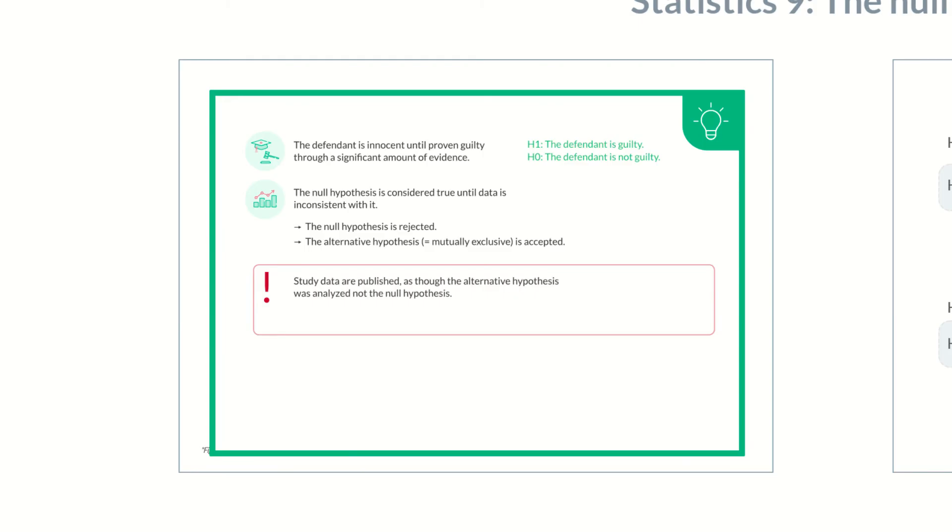Often, the null hypothesis isn't mentioned in publications. In clinical studies, clinical evidence usually indicates that a drug leads to substantial improvements. However, the study actually only provides evidence that the drug alters the measured variable. Whether there's a positive or negative effect is initially not so important.